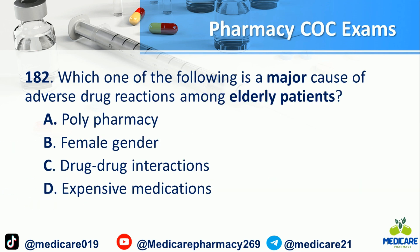Number 182: Which one of the following is a major cause of adverse drug reactions among elderly patients? A) Polypharmacy. B) Female gender. C) Drug-drug interactions. D) Expensive medications.